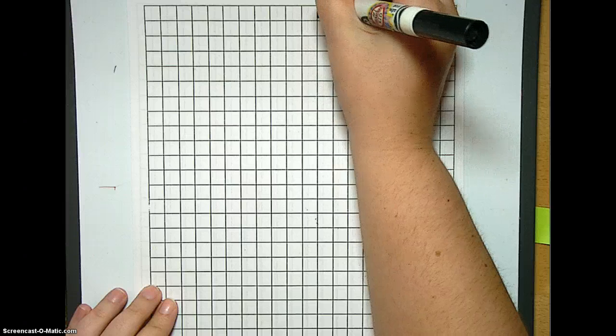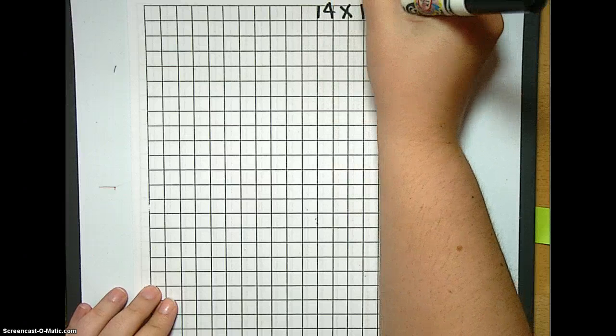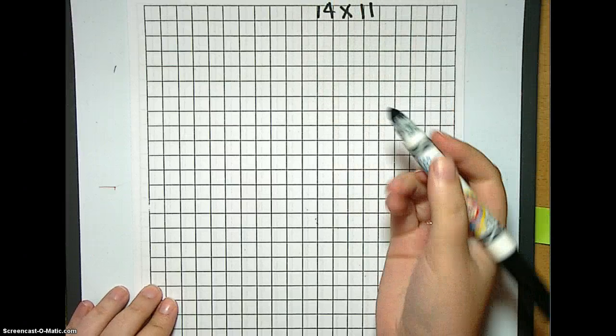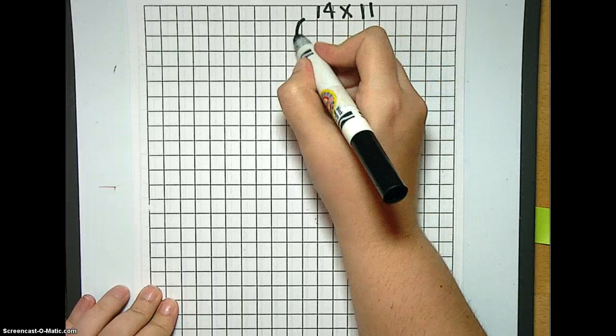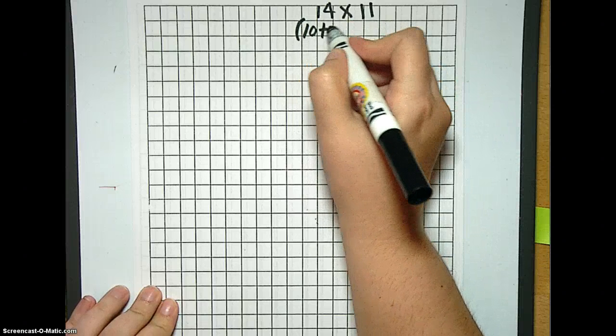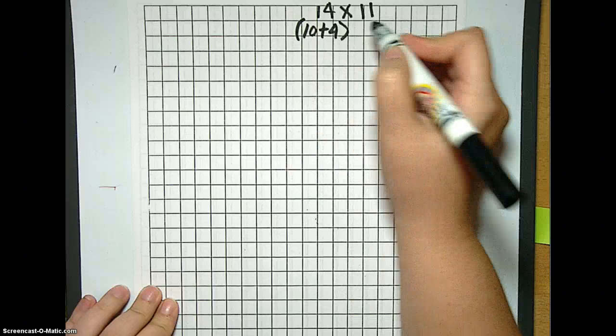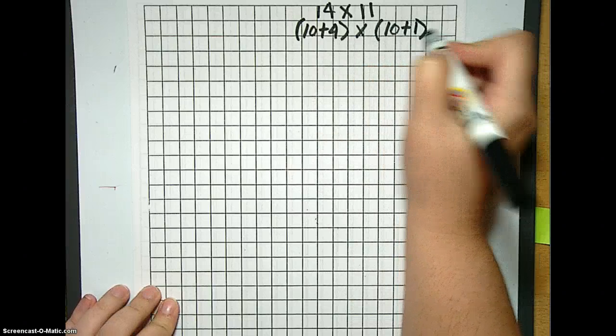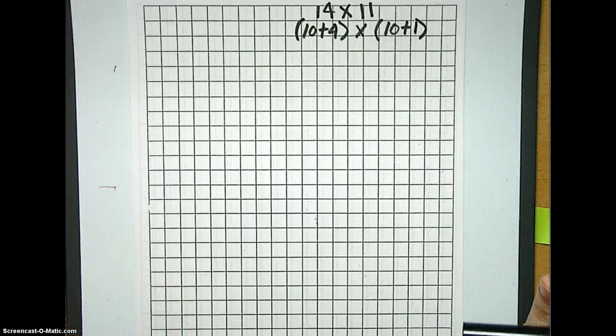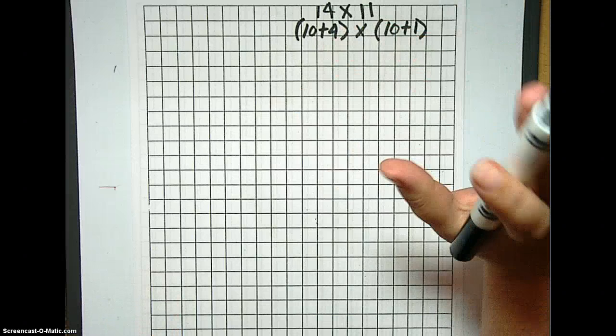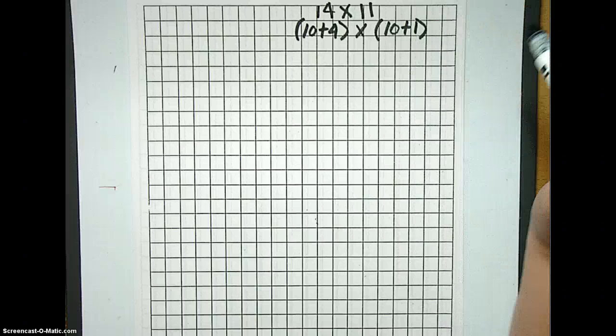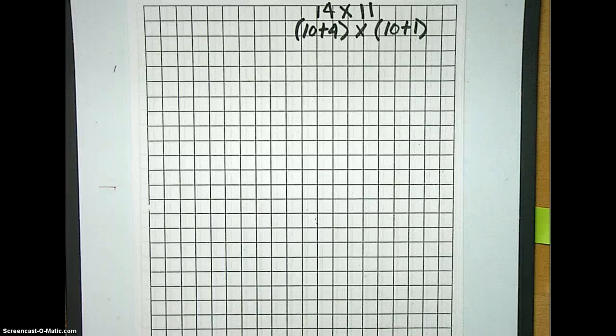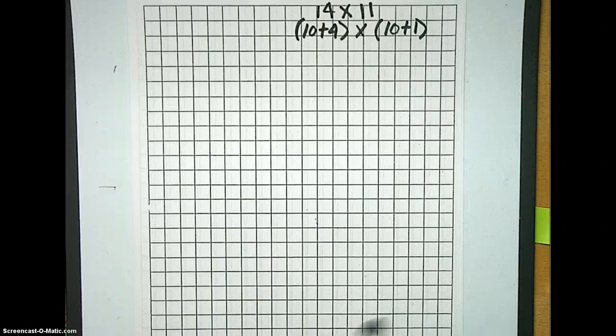So we're going to do 14 times 11. So if we go ahead and break that down a little bit, we know that 14 is actually 10 plus 4, and we're going to have times 10 plus 1. So I didn't actually really change anything here. 14 really is 10 plus 4, and 11 really is 10 plus 1. Nothing crazy happening here.